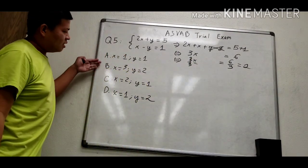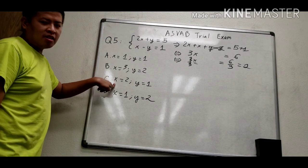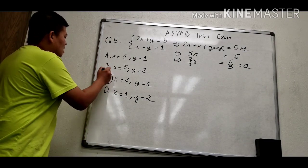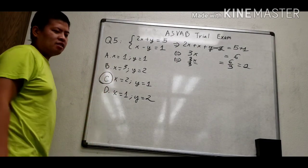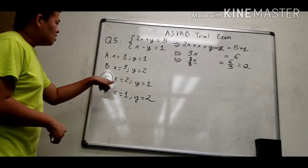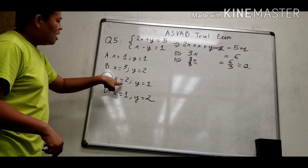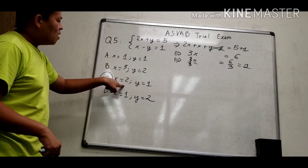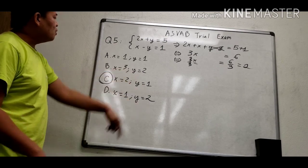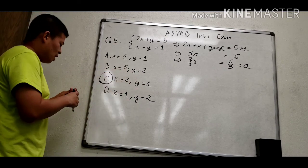In the answer key, we see that only option C has x equal to 2, so that is the final answer. You don't need to find y — just check if the answer has x equal to 2 and choose C.